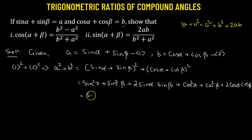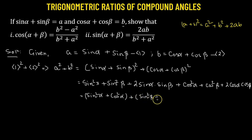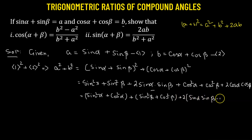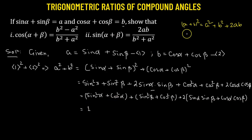Now let's combine the like terms: sine squared alpha plus cosine squared alpha. These are like terms because it's a standard identity whose value is 1. Then we have sine squared beta combined with cosine squared beta. We're using the fact that sine squared theta plus cosine squared theta equals 1.